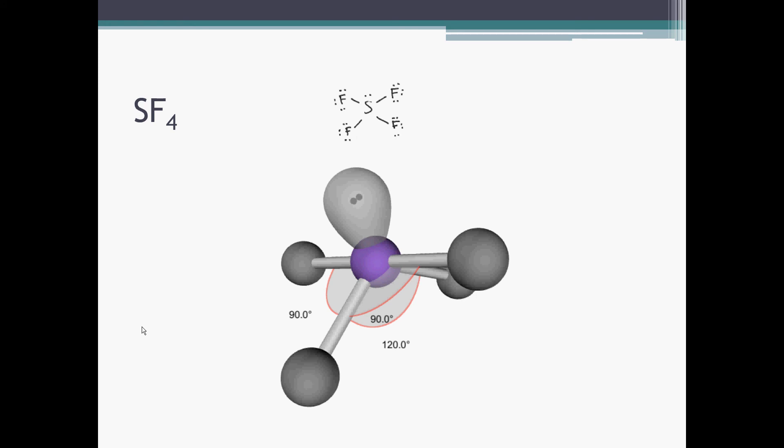If we look at SF4, sulfur tetrafluoride, the sulfur atom actually gets a non-bonding pair and four bonds. So what we actually see is something that looks a little like a seesaw. The two atoms form a base, and then we have a sort of linear piece to the molecule. Looks a little like a teeter-totter or a seesaw.